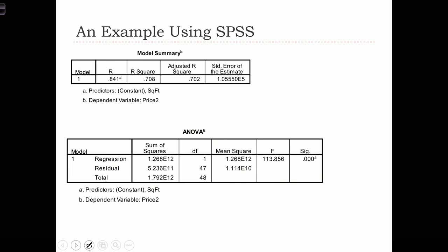SPSS also outputs a model summary table. In this model summary, it's going to report on the r-squared of our model. So in this case, the r-squared was 70%.